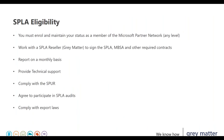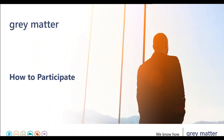For eligibility, you must maintain your status as a Microsoft Partner Network member. You must work with a SPLA reseller to sign an indirect SPLA, the MBSA, and any other required contracts. You must report on a monthly basis — whether zero or not — and provide technical support for any products you report. You must comply with the SPUR and pass license terms to end users, agree to participate in SPLA audits, and comply with export laws, including not exporting to embargoed countries.